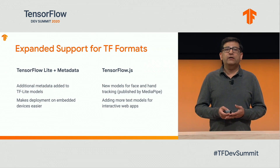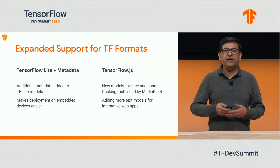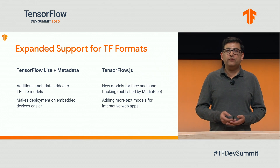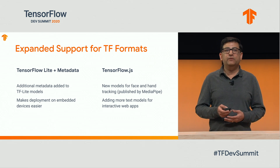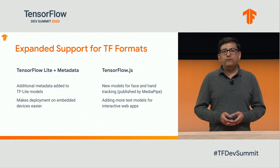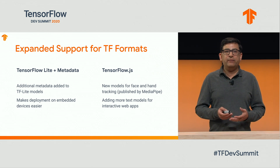We have done a lot of work to support the variety of TensorFlow deployment formats. For TensorFlow Lite, we now support additional metadata along with the TF Lite model file. This metadata stores useful information about the model, such as its version number, its input and outputs, and its class labels, which makes managing these models in your mobile applications much easier. For TensorFlow.js, we are excited to announce two new models today for face tracking and hand tracking, built by our MediaPipe team. These models enable some really cool interactive web applications, and in future we will be adding more text models for web use cases.